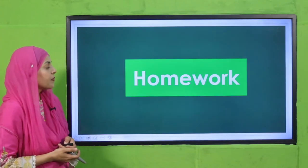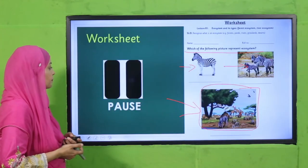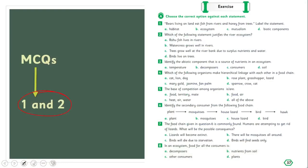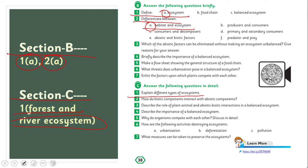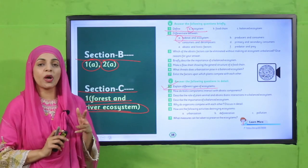For homework: do MCQ number 1 and 2 on page 37. From Section B, do questions 1a and 2a — define ecosystem and differentiate between habitat and ecosystem — in your notebook. From Section C, explain different types of ecosystem: you will explain only forest and river ecosystem. Do these questions in your notebooks and the two MCQs in your book.